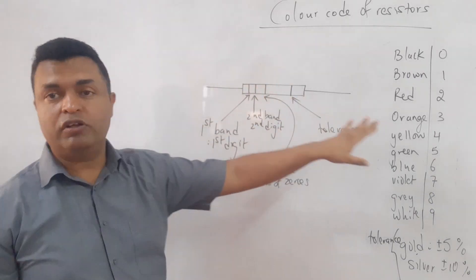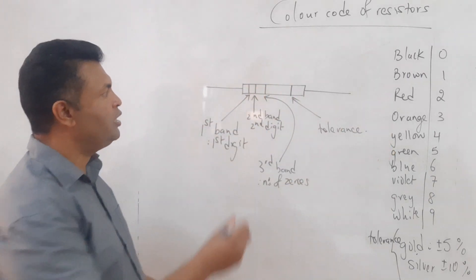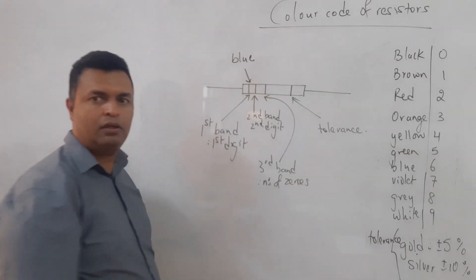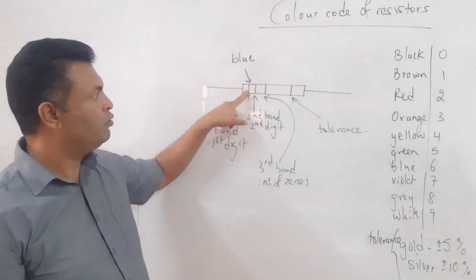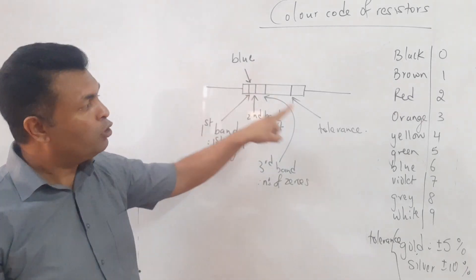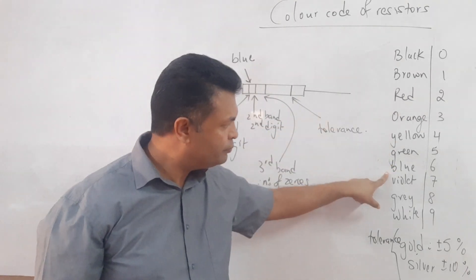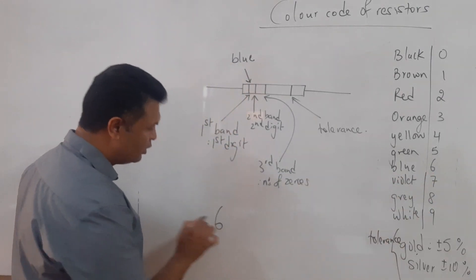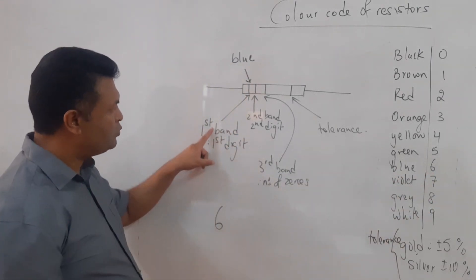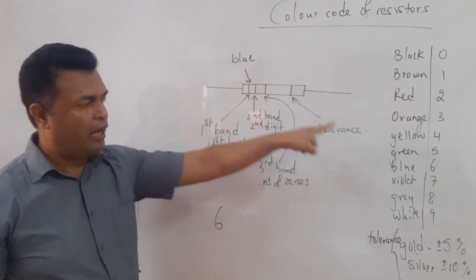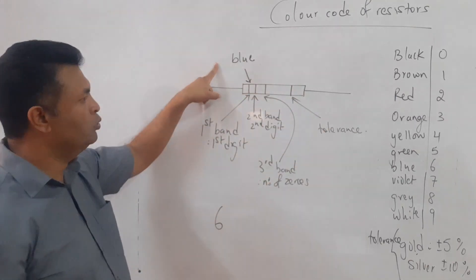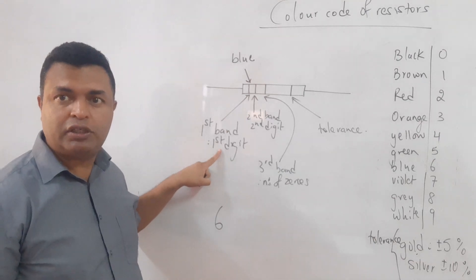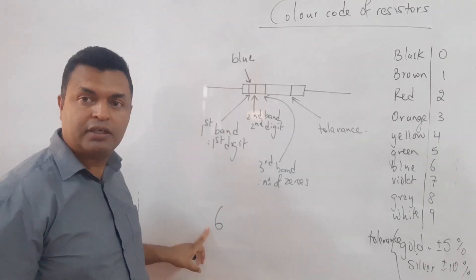Let's say the first band on the resistor is blue. I go to the table and blue represents the number six. So the first digit of the resistance is six, which I place in the first position.